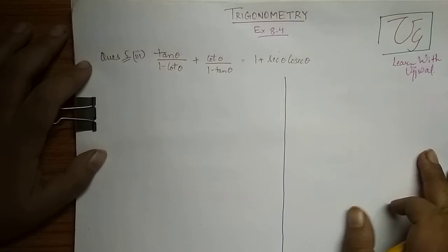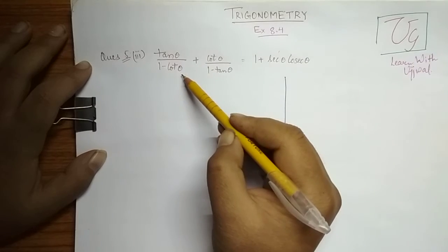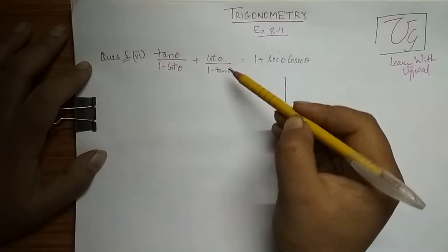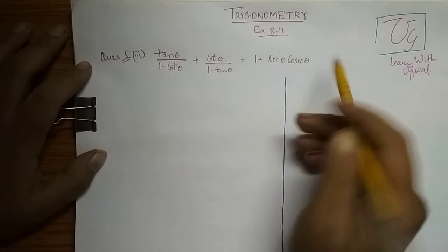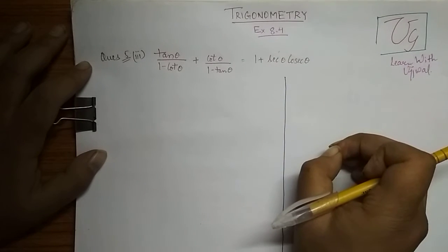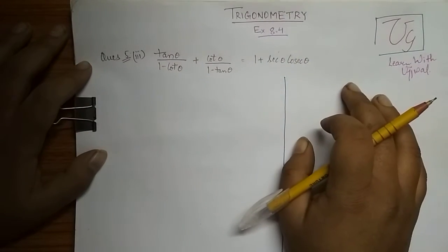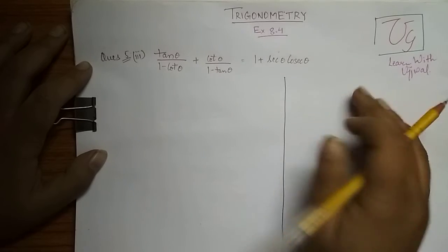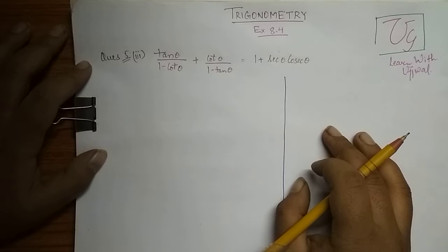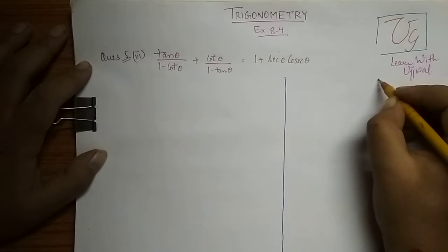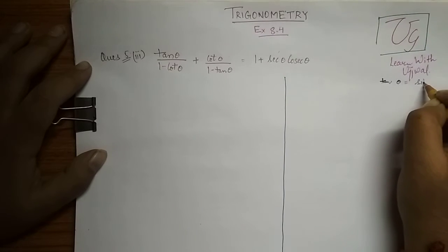Let's start the solution of this question. We are given that tan θ upon 1 minus cot θ plus cot θ upon 1 minus tan θ is equal to 1 plus sec θ cosec θ. Since we do not have any direct relationship between tan θ, cot θ, and sec θ and cosec θ, we will convert tan θ and cot θ in terms of sin θ and cos θ. We know that tan θ is equal to sin θ upon cos θ.